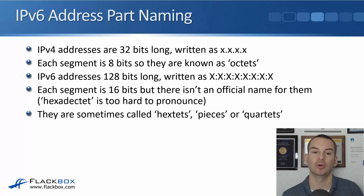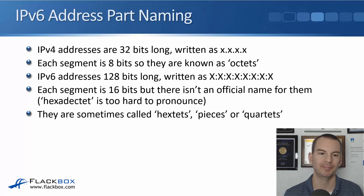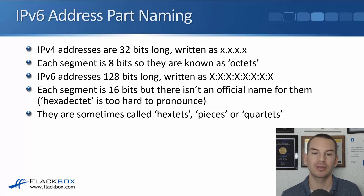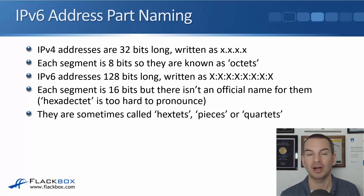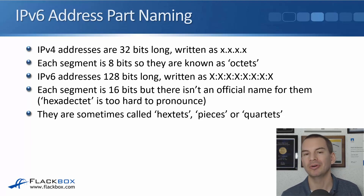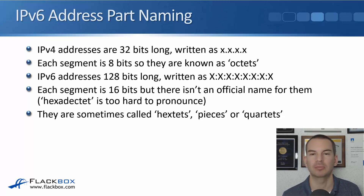IPv6 addresses, on the other hand, are 128 bits long, written as that string of x's with colons in between. Each segment between the colons is 16 bits. There isn't an official name for them like we have octets with IPv4 — the equivalent would be 'hexadectet,' but that's too hard to pronounce. What they're commonly called is a hex-tet, a piece, or a quartet. I'll refer to them as a hex-tet, segment, or piece.